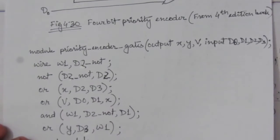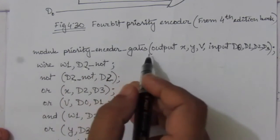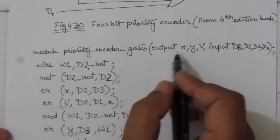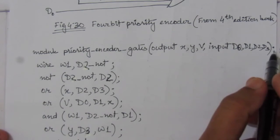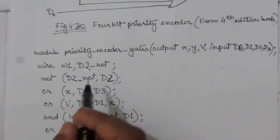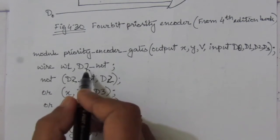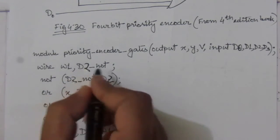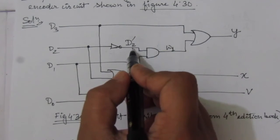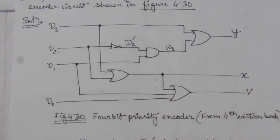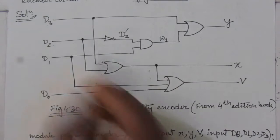Now let us write the HDL gate level description. First, we write: module priority_encoder_gates, with outputs x, y, and capital v, and inputs d0, d1, d2, and d3, followed by a semicolon. Then we define wires w1 and d2_not (that is, d2 complement). These are the two wires we have seen in the circuit — d2_not and w1.